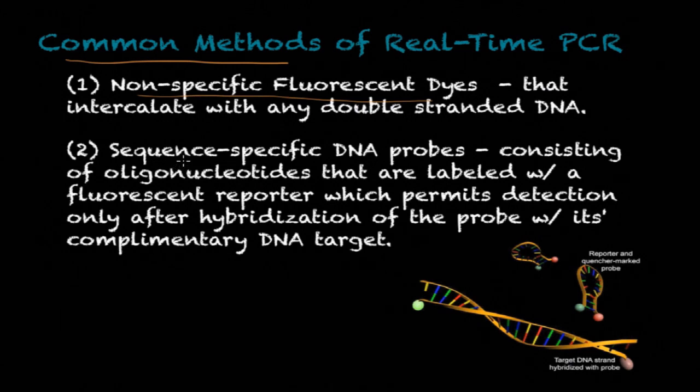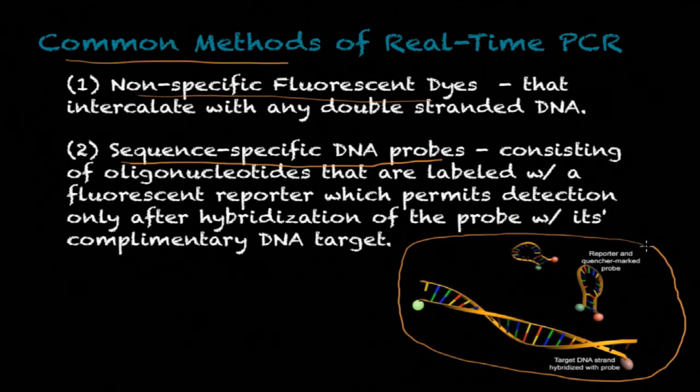The second common method is sequence-specific DNA probes, something like you can see here in this illustration. The sequence-specific DNA probes consist of oligonucleotides or a few nucleotides that are labeled with a fluorescent reporter, which permits or allows detection only after hybridization of the probe with its complementary DNA target. In other words, this DNA probe that you see here will be hybridized and bind to its complementary sequence in the DNA template or the DNA sequence that you want to detect in real-time PCR.